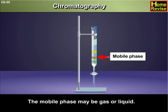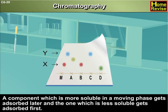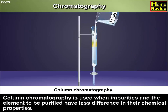The mobile phase may be gas or liquid. A component which is more soluble in the moving phase gets adsorbed later, and the one which is less soluble gets adsorbed first. The component adsorbed later is de-adsorbed first. Column chromatography is used when impurities and the element to be purified have less difference in their chemical properties.